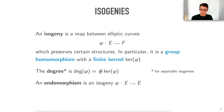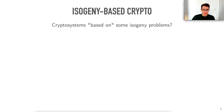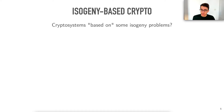An endomorphism is an isogeny from a curve to itself. With these structures, we know how to build some cryptosystems based on isogeny problems.